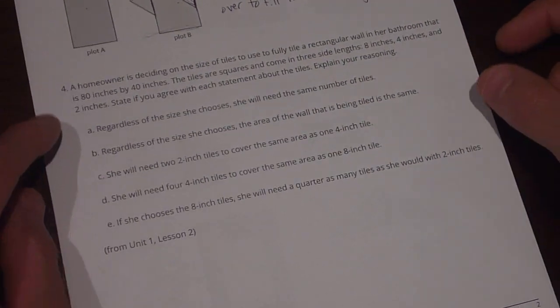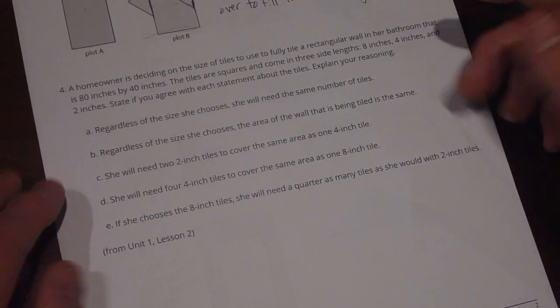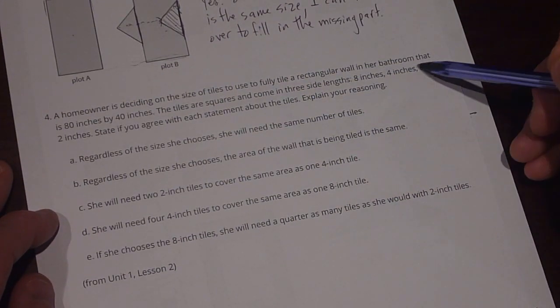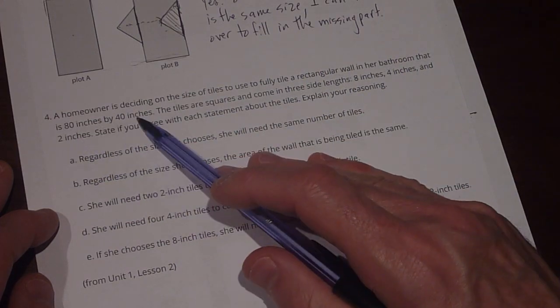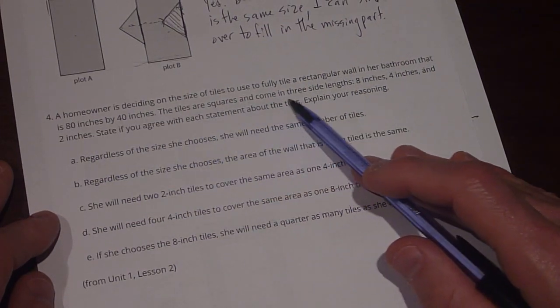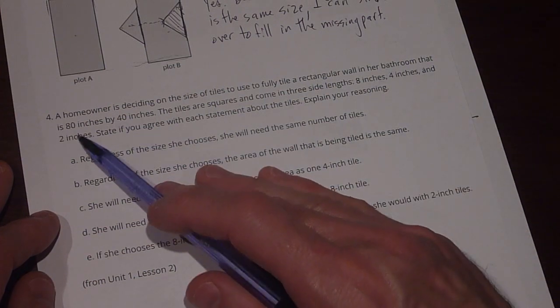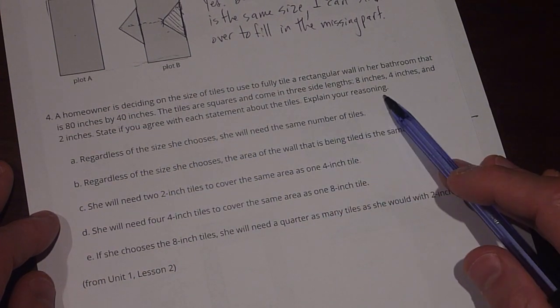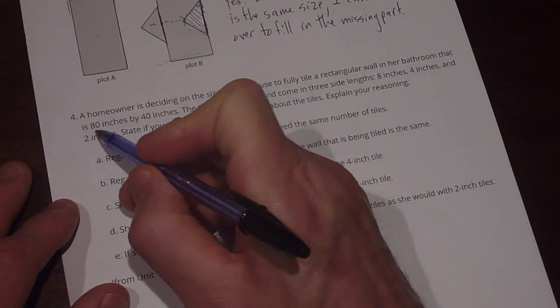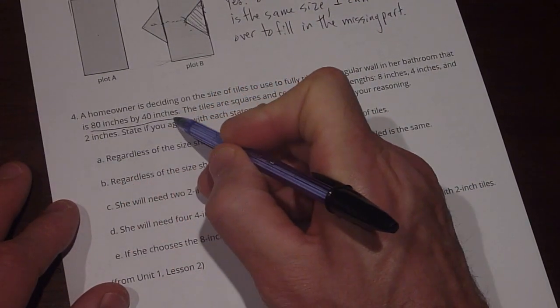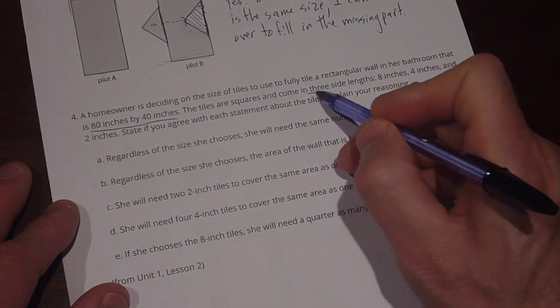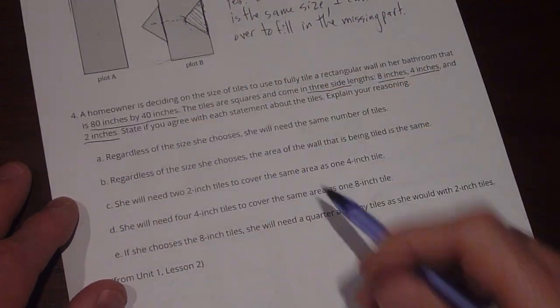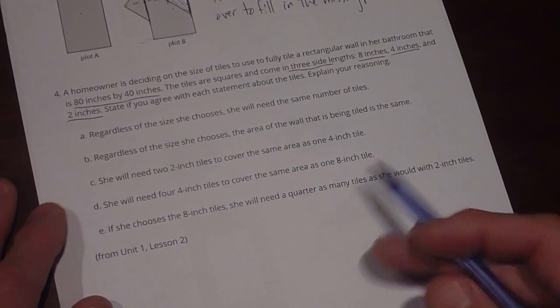Because the triangle in figure B is the same size. I can slide it over to fill in the missing part. And that's going to convince me that the areas are going to be the same for both of them. All right, now number four has five parts, A, B, C, D, and E. A homeowner is deciding on the size of tiles to use to fully tile a rectangular wall in her bathroom that is 80 inches by 40 inches. The tiles are squares and come in three side lengths, 8 inches, 4 inches, and 2 inches. State if you agree with each statement about the tiles and explain your reasoning. Okay, so there's a bunch of information here that's important. The wall is 80 inches by 40 inches. And then the tiles come in three side lengths: 8 inches, 4 inches, and 2 inches. So we need to keep that in mind.